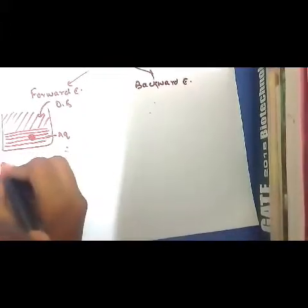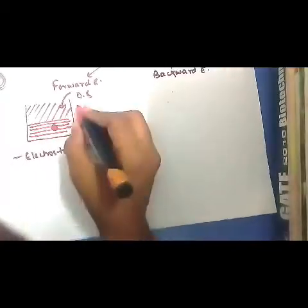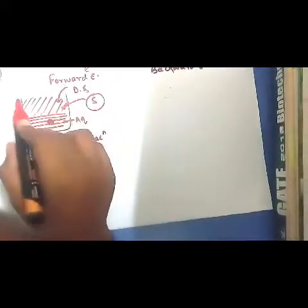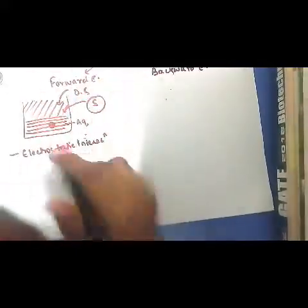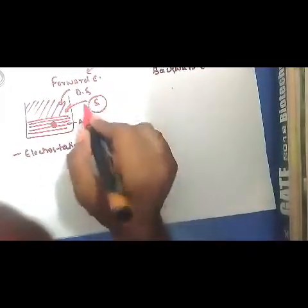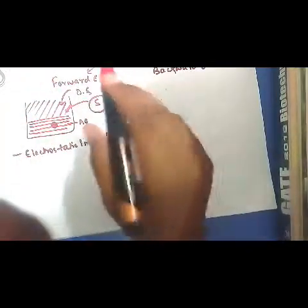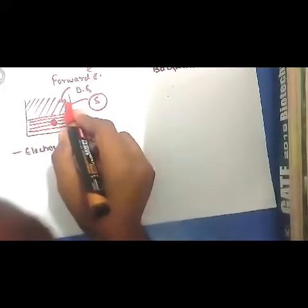There will be electrostatic interaction between the protein and the organic solvent. We will add a surfactant to it. When we add a surfactant, micelles form. Since organic solvent is always on top — aqueous phases are heavier than organic phases, so organic solvent tends to be in the top layer and aqueous in the bottom layer. The surfactant will first interact with the organic solvent, and reverse micelles form in the organic solvent. Due to electrostatic interaction, the protein interacts with the organic solvent and gets trapped in the reverse micelle.